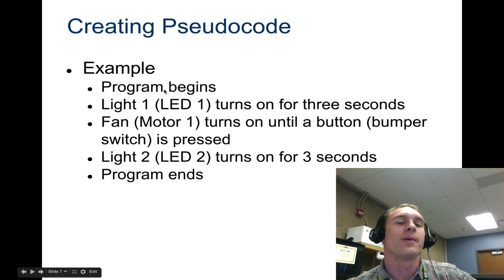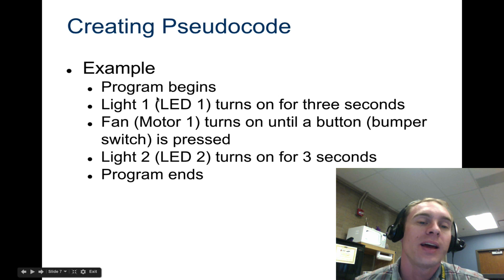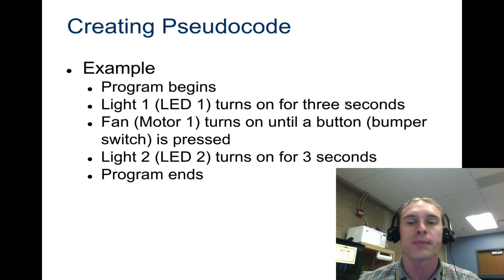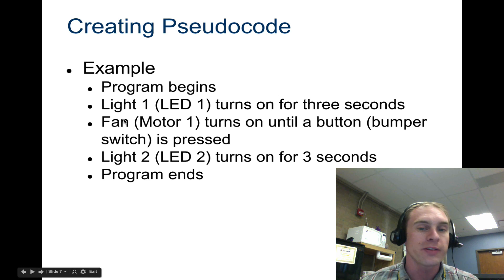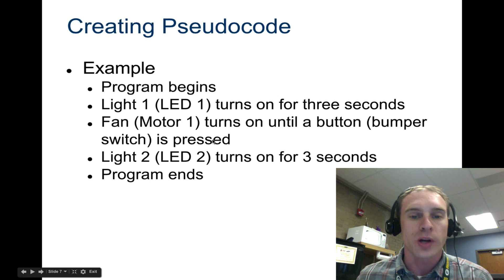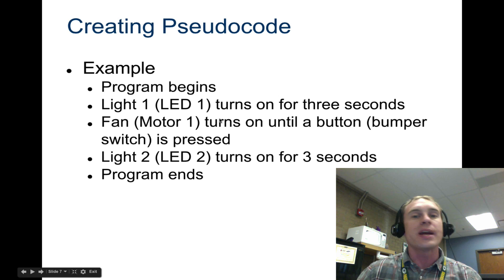All right, so here's your program example. The program would begin. Then you would want light number one, LED one, to turn on for three seconds. This is a great example of pseudocode. Then you want the fan to turn on until a button is pressed. And then you want the light two, LED two, to turn on for three seconds. Then the program ends.